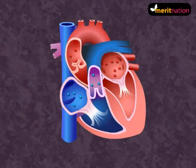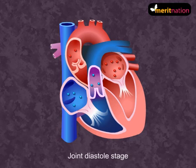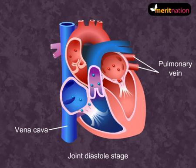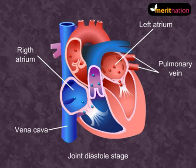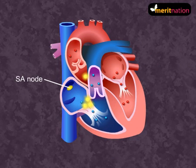Look at this figure. In this you can make out that all four chambers of the heart are in a relaxed stage, i.e., joint diastole stage. You will observe here that the bicuspid and the tricuspid valves are open. The blood will flow from the pulmonary vein and vena cava to the left and right atrium respectively.